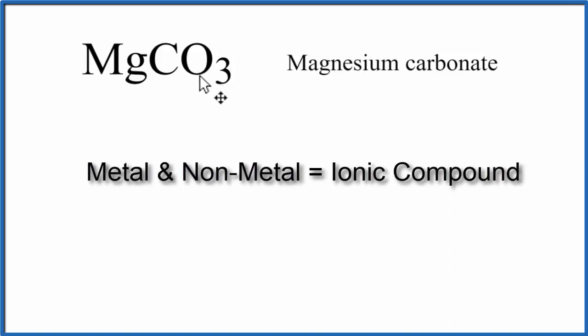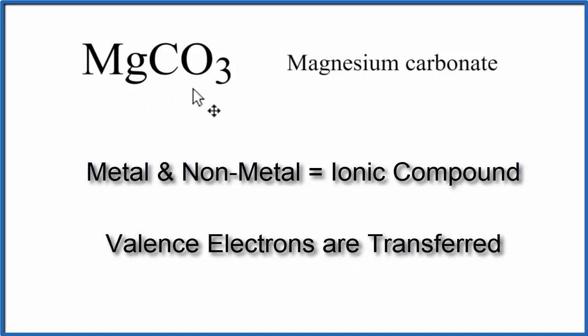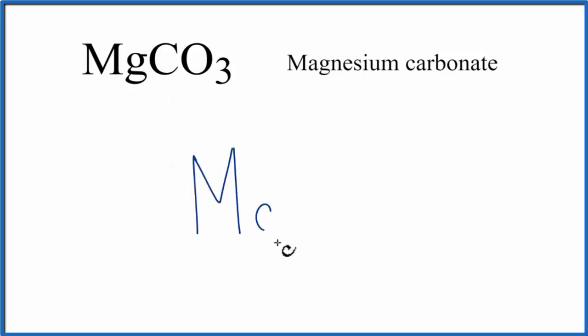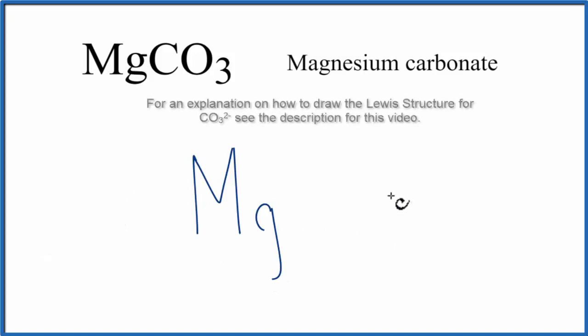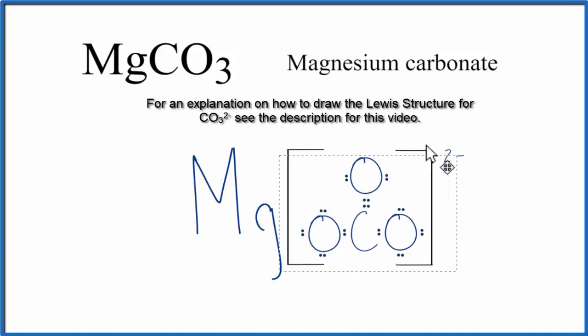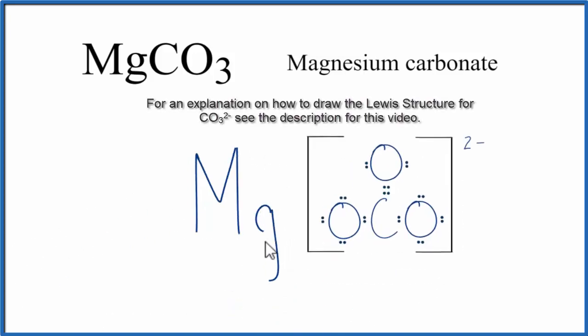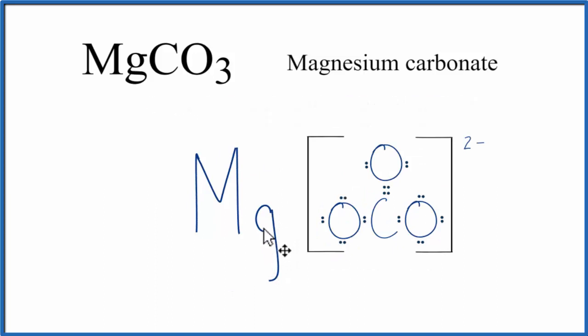In ionic compounds, the metal will transfer valence electrons to the non-metal. So let's write our Mg, and then we'll put the carbonate ion next to that. Magnesium's in group 2 on the periodic table. That means it has two valence electrons. It'll transfer those valence electrons to the CO3.